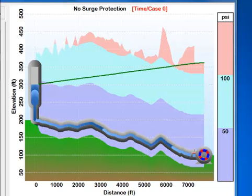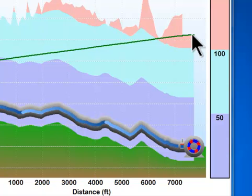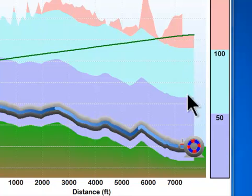Now the first presentation will be with no surge protection. Again, the pump is going to trip and this is the hydraulic grade line. This indicates how high the pressure is at all points along the pipeline. When the pump trips, this will drop down and you'll see the effects of the pressure surge as you go through this analysis. So let's take a look at this.